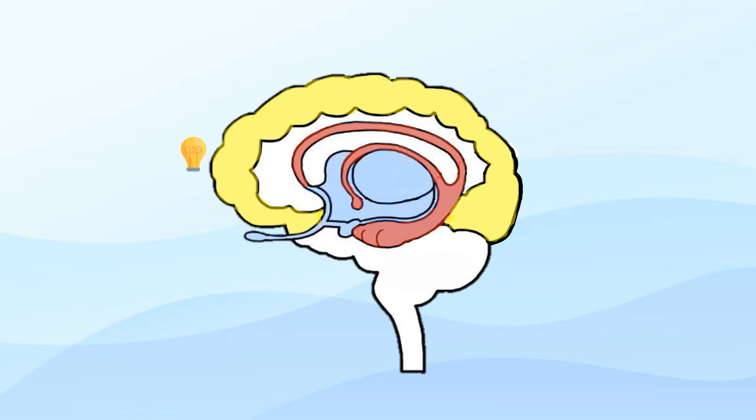If a memory is deemed significant or distinctive, the hippocampus sends it back to the cerebral cortex for long-term storage. Conversely, less important memories are discarded, remaining as short-term memories.